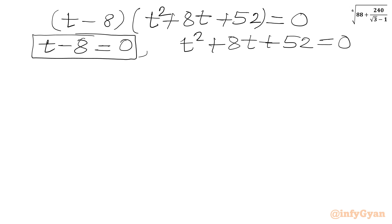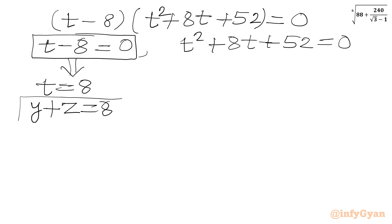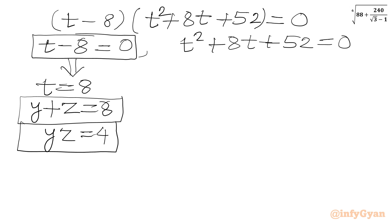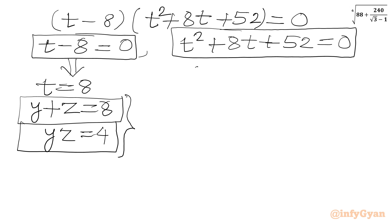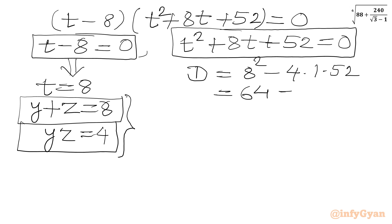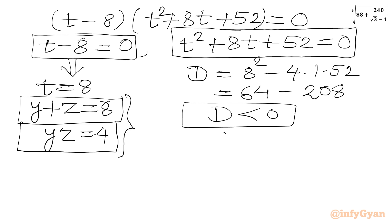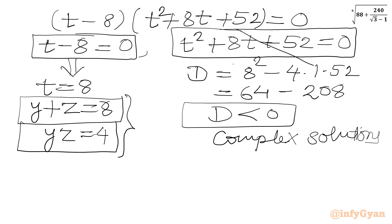From the first factor, t − 8 = 0 gives t = 8, so y + z = 8. For the quadratic t² + 8t + 52 = 0, the discriminant is b² − 4ac = 64 − 4(1)(52) = 64 − 208, which is negative. This gives only complex solutions, so the quadratic factor is rejected.